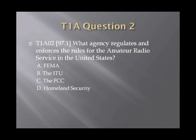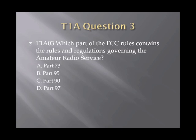Question 2. What agency regulates and enforces the rules for the amateur radio service in the United States? A. FEMA. B. The ITU. C. The FCC. Or D. Homeland Security. Question 3. Which part of the FCC rules contains the rules and regulations governing the amateur radio service? A. Part 73. B. Part 95. C. Part 90. Or D. Part 97.